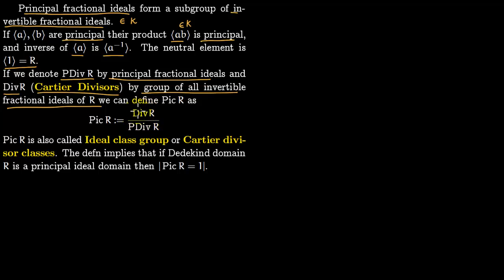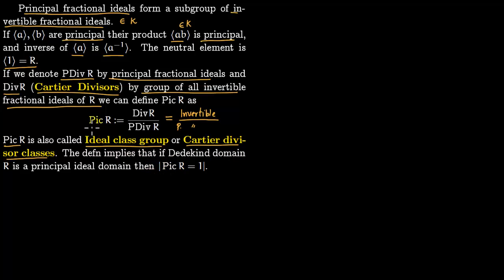This is the same notation used in lectures on Riemann-Roch: the numerator is all invertible fractional ideals, and the denominator is principal invertible fractional ideals. Pic(R) is also called the ideal class group or Cartier divisor classes. Immediately from the definition, in a Dedekind domain this group has size 1 — that is, it is trivial — if all fractional ideals are principal. So if R is a principal ideal domain, then Pic(R) = 1.